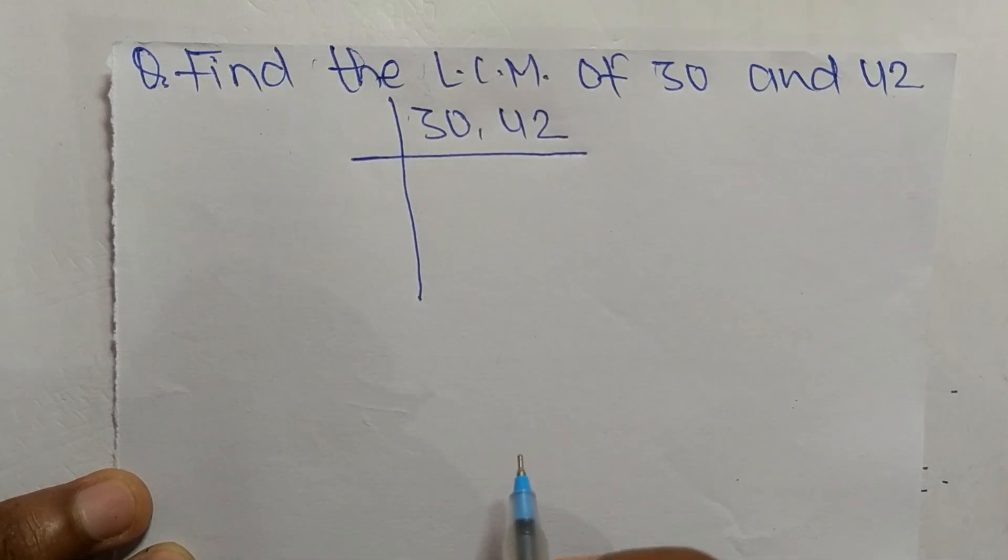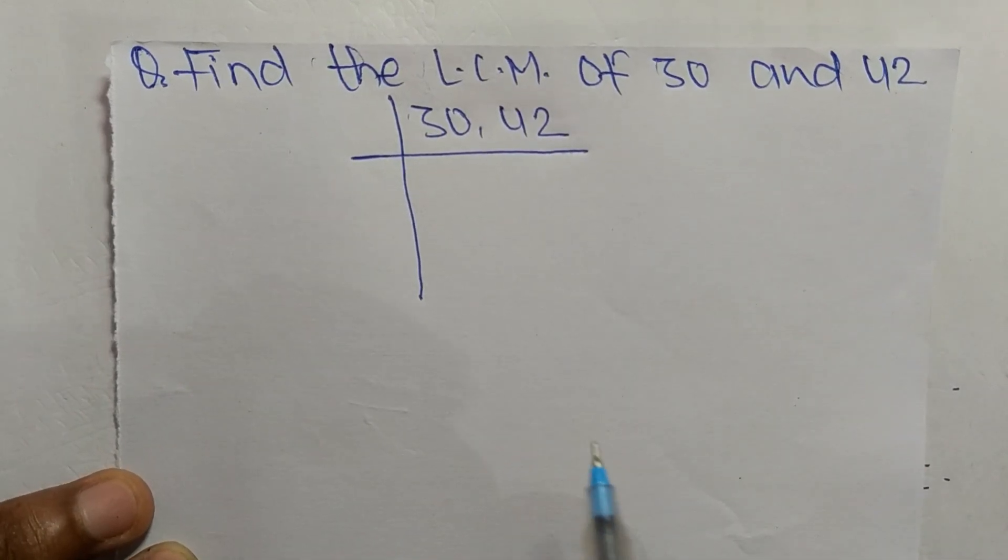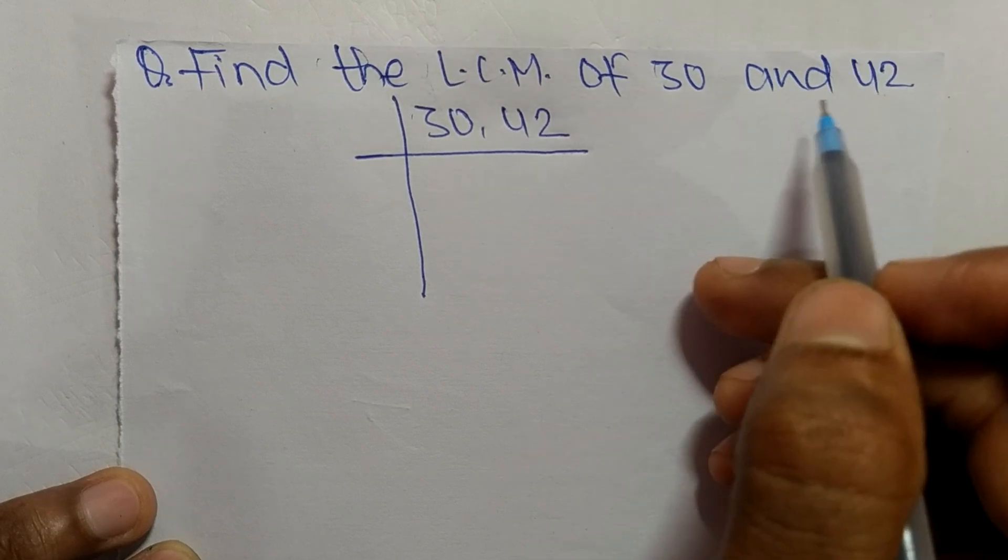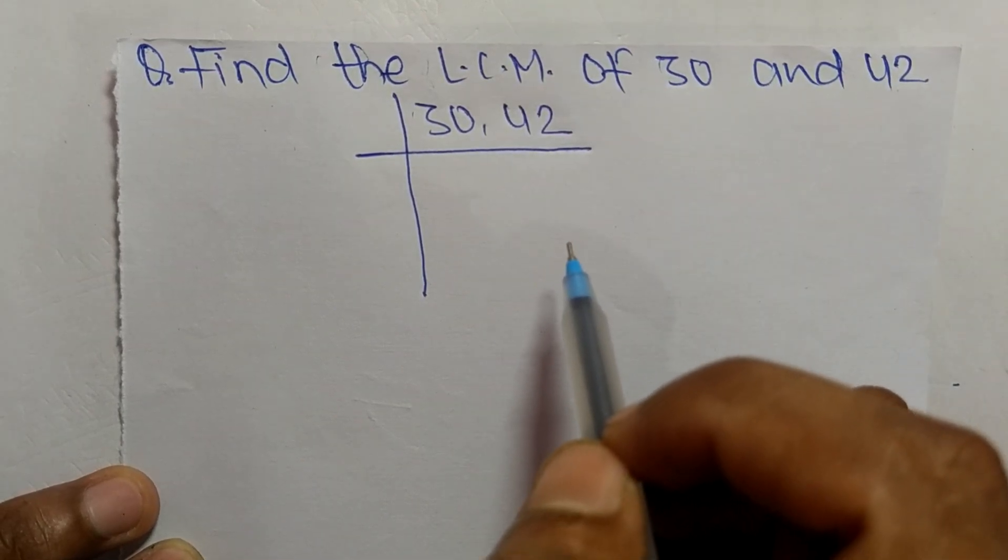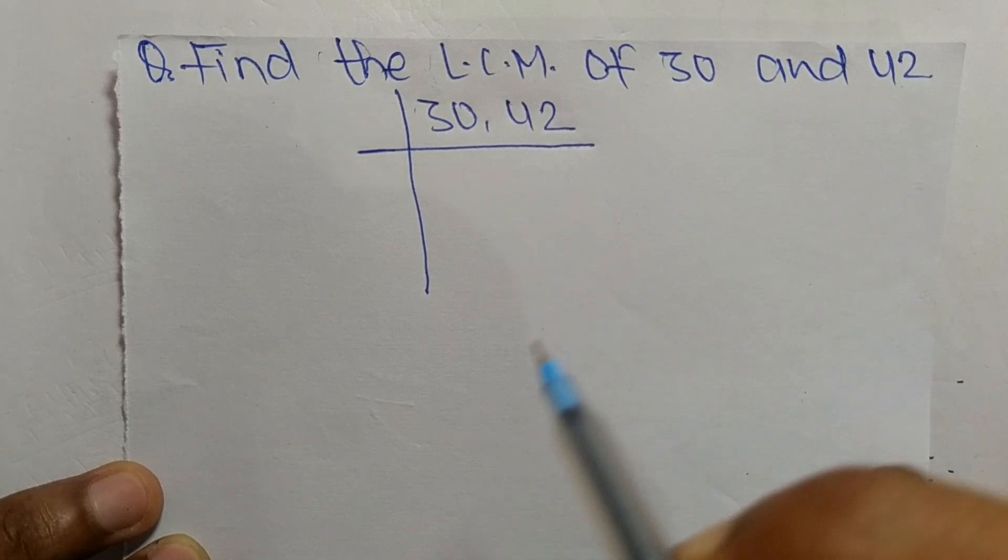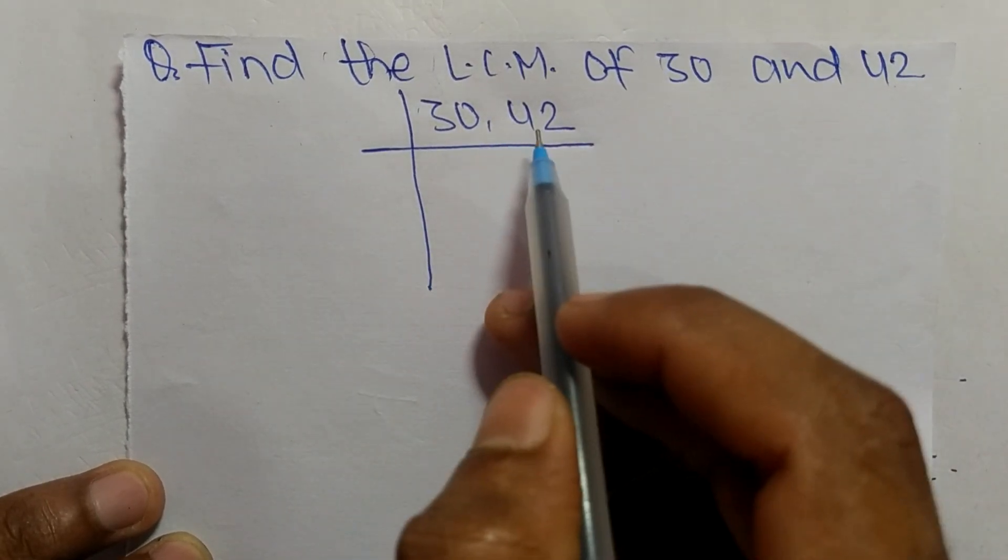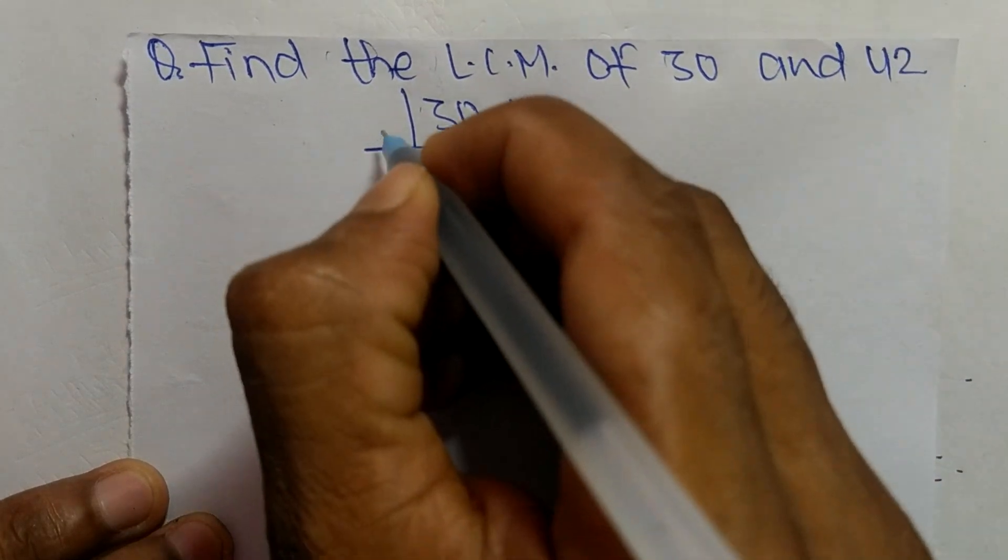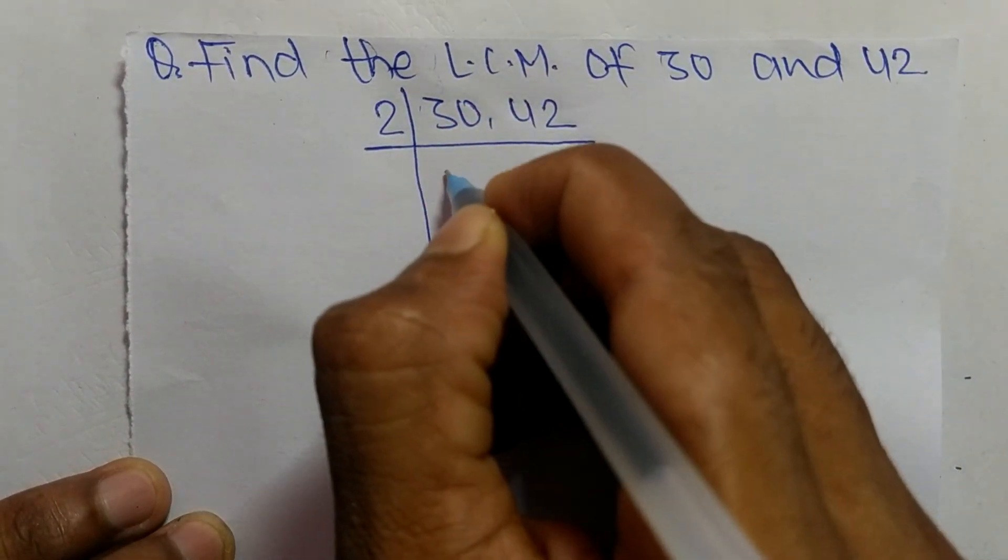Today in this video we shall learn to find the LCM of 30 and 42. To find LCM, first we choose the lowest number that can exactly divide 30 and 42. The number is 2.